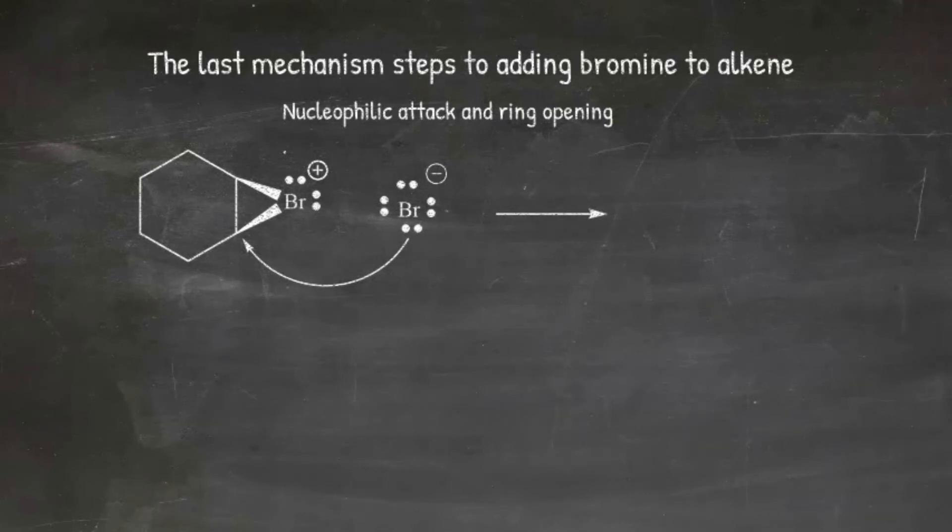This is immediately followed by the ring opening at the front side of the ring to produce the anti-addition product, trans-1,2-dibromocyclohexane.